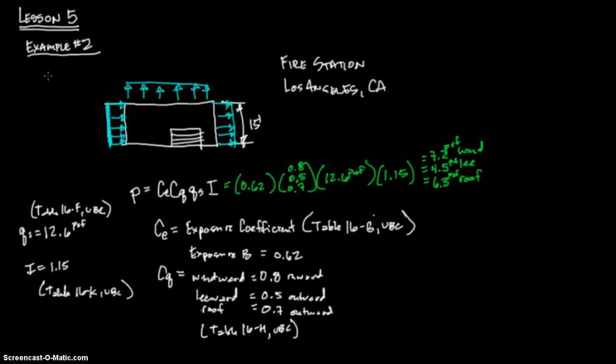Let's go ahead and put them up here. Our windward is 7.2 PSF on that wall. The leeward is 4.5 PSF. And your roof load is 6.3 PSF. And those are your answers. What is the static horizontal and vertical wind pressure in pounds per square foot? And that's what we're giving them. I hope that was helpful and not too confusing. I will see you on the next video.